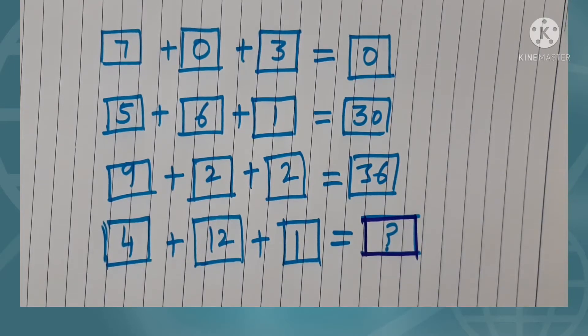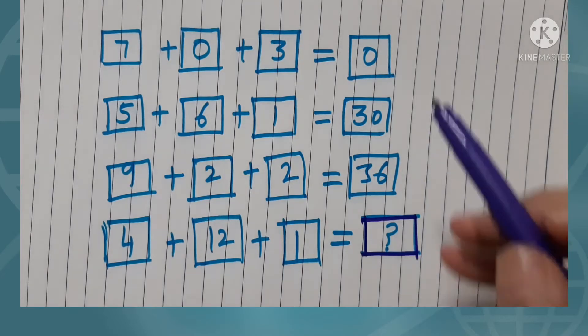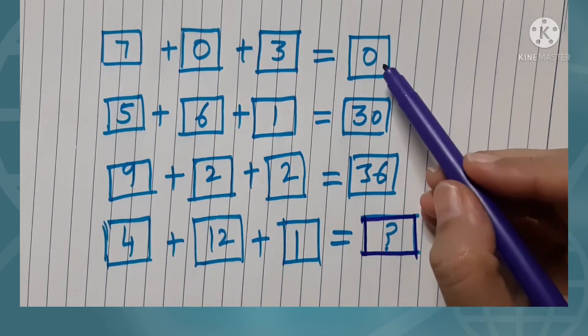9 plus 2 plus 2 is 36. We need to find what is 4 plus 12 plus 1. I hope you are trying. Okay, let us observe the pattern. We see that here we get this zero by multiplying all the three given numbers.